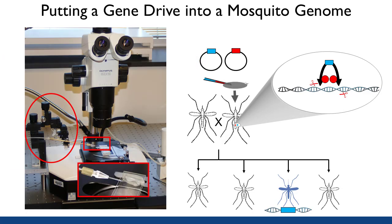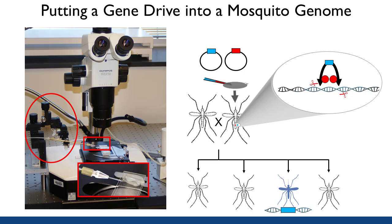In order to introduce that gene-drive system, or any transgene, into a mosquito, one begins by physically introducing the DNA genetic construct containing the gene-drive, and any other genes of interest, into a very young mosquito embryo by microinjection. The injection is accomplished using a microscope, fine glass needles, and micromanipulators. This is a technically demanding process.